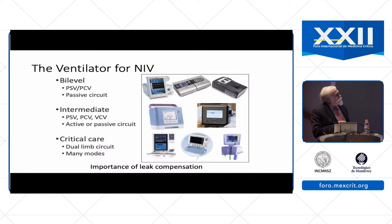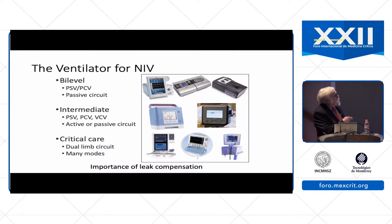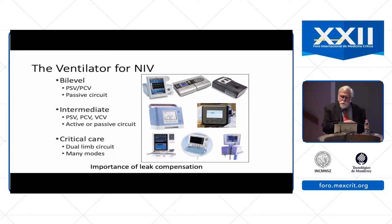There are a number of ventilators that can be used for non-invasive ventilation. I typically group those into bi-level devices, intermediate devices, and critical care devices. The bi-level devices use a passive circuit. The intermediate devices can use either an active or a passive circuit. The critical care devices use a dual limb circuit, and many of the current generation critical care ventilators have non-invasive ventilation modes.